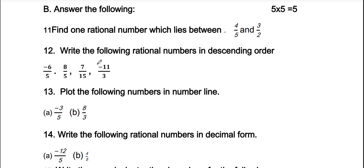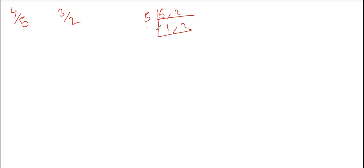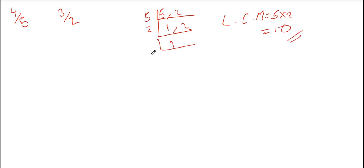In this assignment we will talk about rational numbers. Lesson-based question: find one rational number which lies between 4/5 and 3/2. To find a rational number between 4/5 and 3/2, we need a common denominator. The LCM of 5 and 2 is 10, so we convert both fractions to have denominator 10.